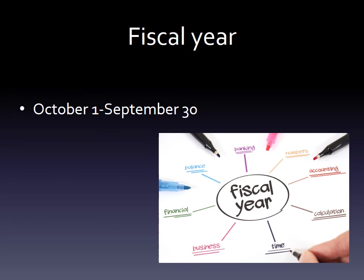This is just housekeeping vocabulary: the fiscal year runs from October 1st to September 30th — that is the U.S. government's fiscal year.